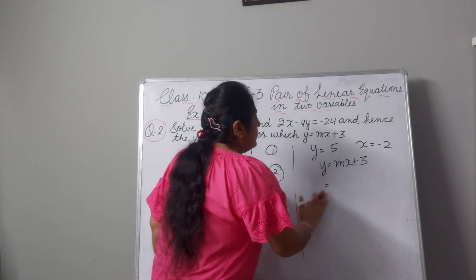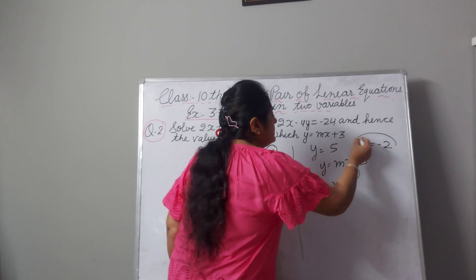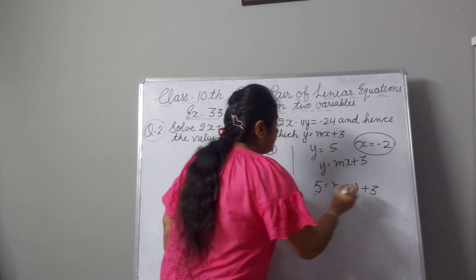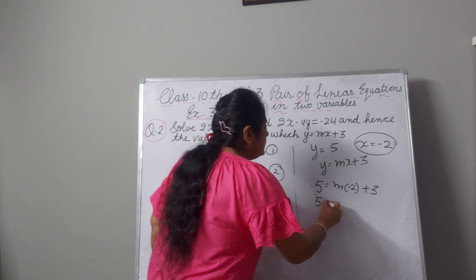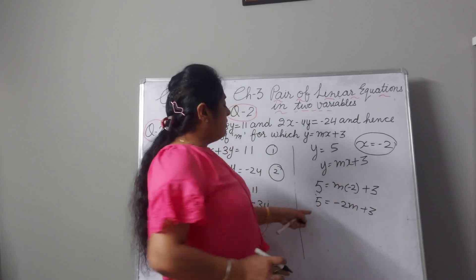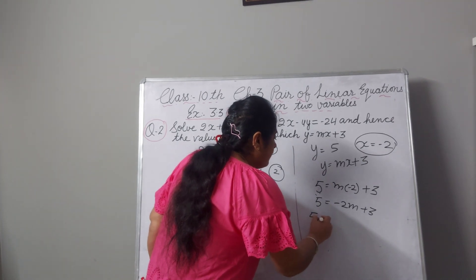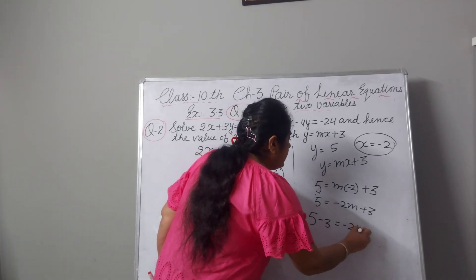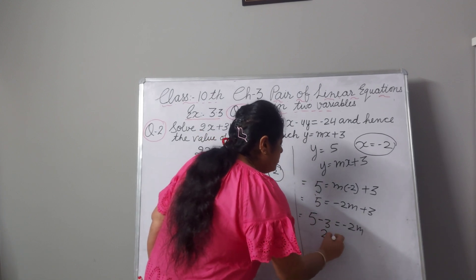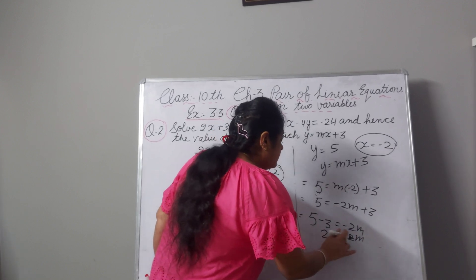In place of y, I will write 5, m in place of x, we will write minus 2 plus 3. This 3 will come in left hand side and sign will be changed, minus will be there. 5 minus 3 equal to minus 2m, 2 equal to minus 2m.